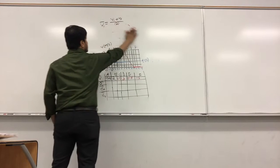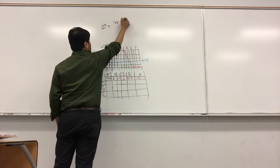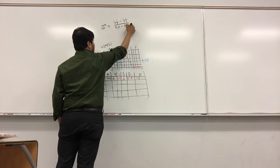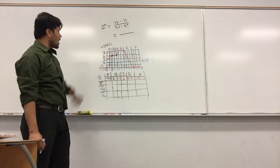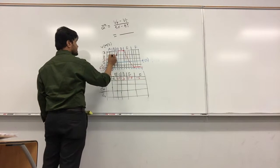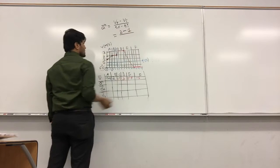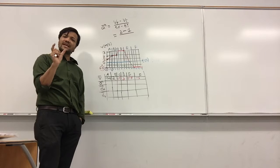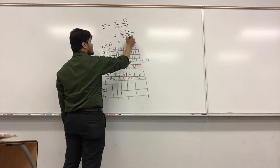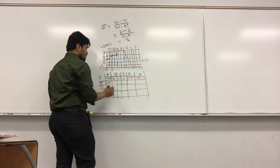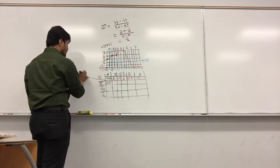Now we're going to do the acceleration. The formula for acceleration is a = (v_f − v_i) / (t_f − t_i). For section A: v_f = 2, v_i = 1, t_f = 2, t_i = 0. So a = (2 − 1) / (2 − 0) = 1/2 = 0.5 meters per second squared.